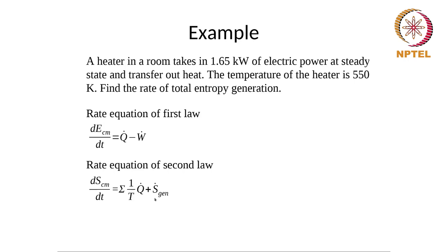The heater takes in electrical work and gives out heat. The energy of the heater does not change — whatever electrical power comes in goes out as heat, since energy is conserved. The temperature and entropy of the heater do not change at steady state. However, the heater is generating entropy at a rate of 3 W/K, which is given out along with the heat. This is an irreversible process converting electrical power into heat.